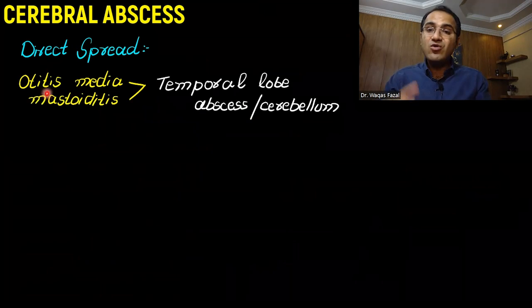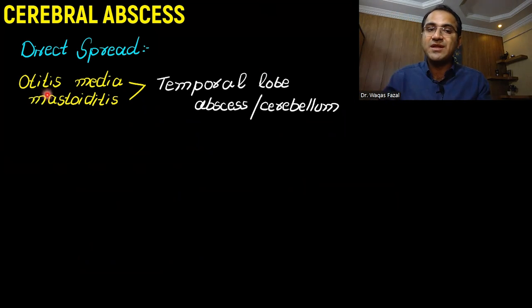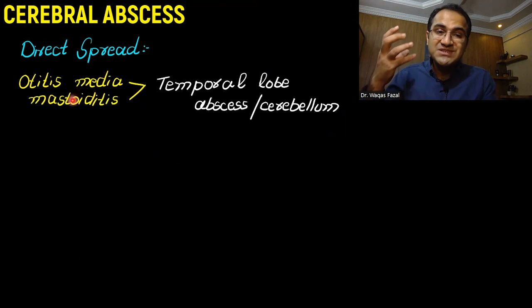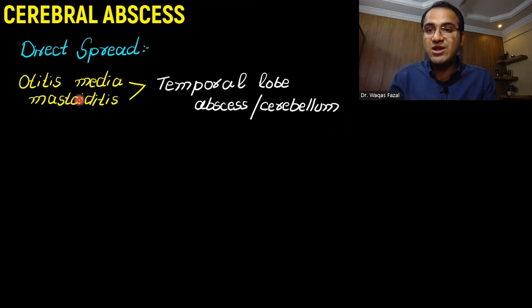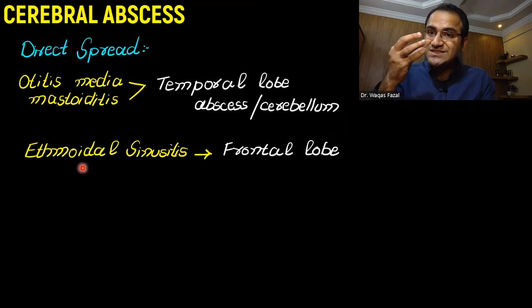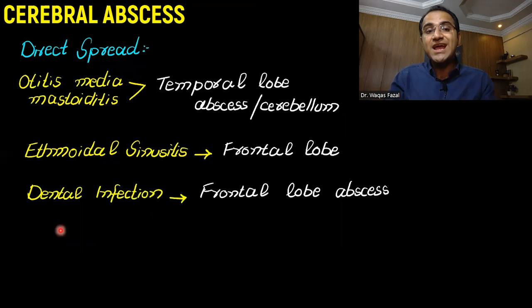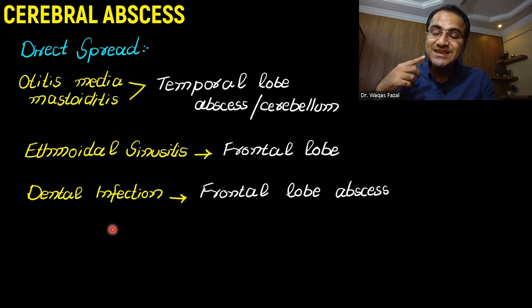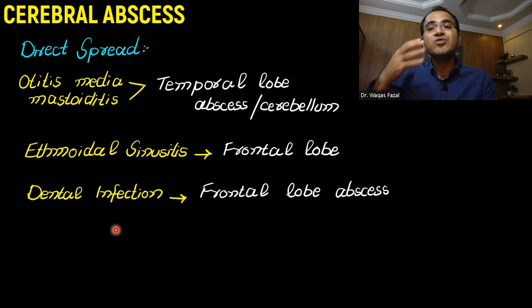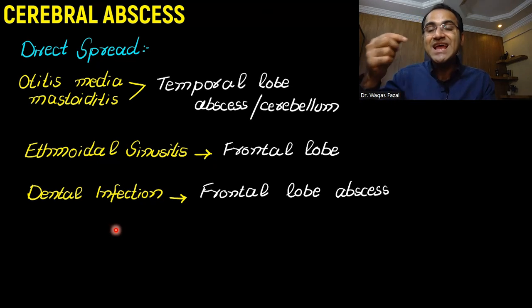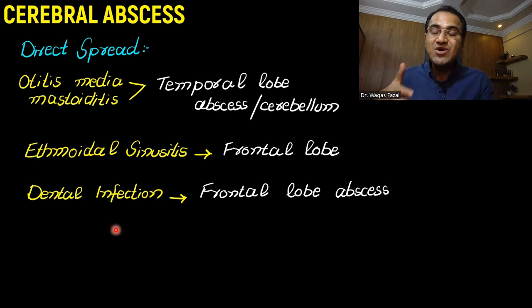How does this infection get to the brain? If the patient has otitis media or mastoiditis, you would see temporal lobe abscess or abscess in the cerebellum. If the patient has ethmoidal sinusitis, it would spread to the frontal lobe, and if the patient has dental infection, that will also spread to the frontal lobe. It also depends on the venous drainage — infections involving the face and ear drain toward the brain, carrying bacteria and resulting in cerebral abscess.